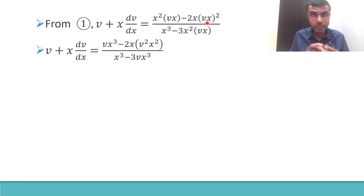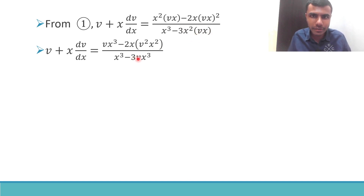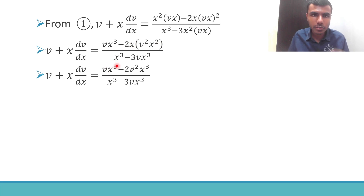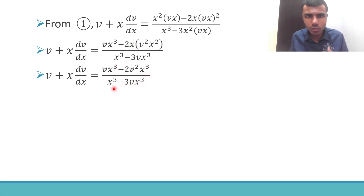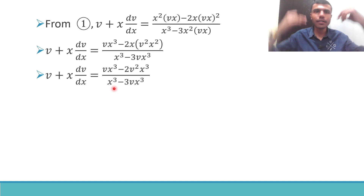So I have vx³ minus 2x times (vx)² which is v²x². In the denominator I have 3x² times vx, so x² times x is again x³, giving 3vx³. And then 2x times v times v²x² gives x times x² = x³, so this is vx³ minus 2v²x³, divided by x³ minus 3vx³.